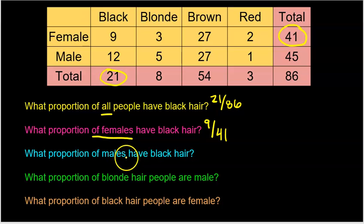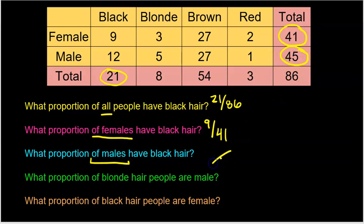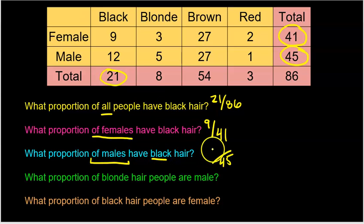What proportion of males have black hair? This is another conditional — 'of the males.' Now I'm only allowed to look at the 45 males. Of those 45 males, 12 have black hair, so the answer is 12 out of 45.